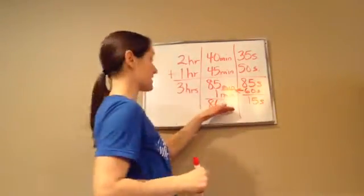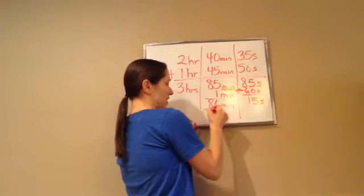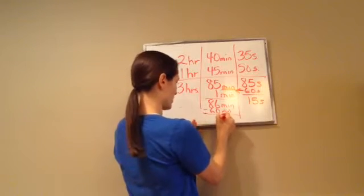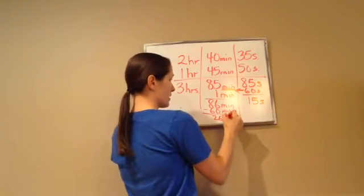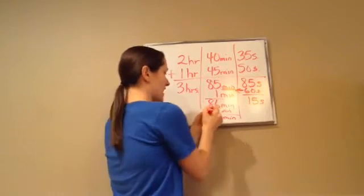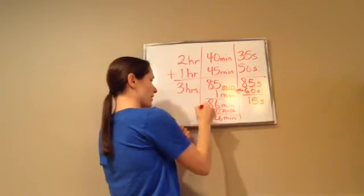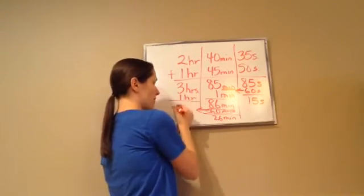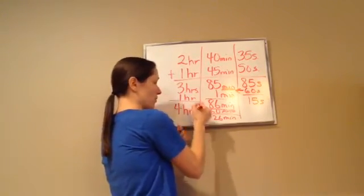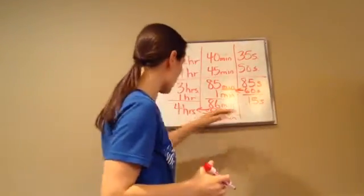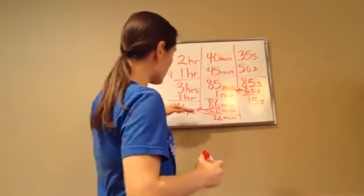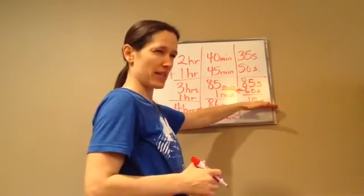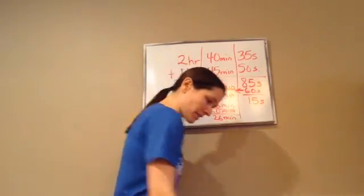60 minutes is an hour. So I can take 60 of the minutes from here, and that gives me what? 26. 26 minutes left. So if I take 60 minutes and bring it over here, that gives me what? 1 hour, right? So that makes 4 hours. So now in the simplest form, this equals 4 hours, 26 minutes, and 15 seconds. See how we did that? So that's pretty much lesson 49.